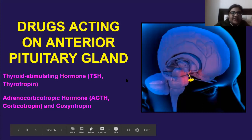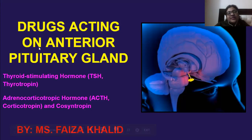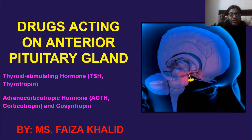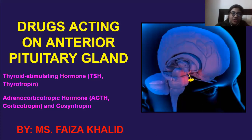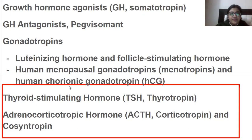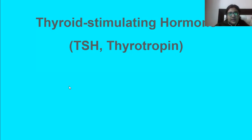Drugs acting on the anterior pituitary gland — we are going to talk about TSH, which is the thyroid stimulating hormone, also called thyrotropin. We will also talk about adrenocorticotropic hormone, which is ACTH, also called corticotropin and cosyntropin.